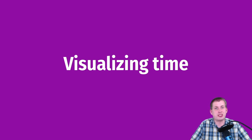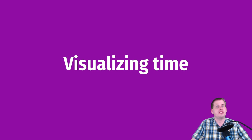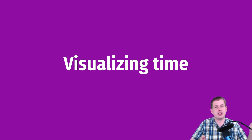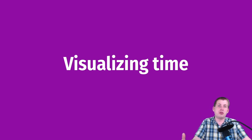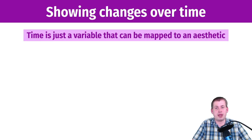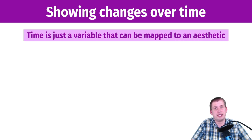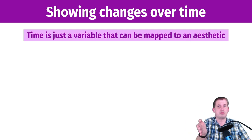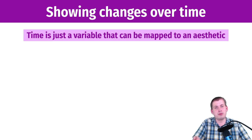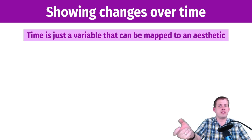To actually visualize changes over time, there's no magic trick to doing it. As long as you understand the grammar of graphics, where we're taking a variable in our data set and mapping it to some aesthetic, that's all we're doing with time visualization. Time is just another variable that can be mapped onto an aesthetic. It's generally measured as months, a year column, or an actual timestamp — if you have website visits, you'll have second-by-second timestamps. Anything that measures the passage of time can be put in a column and used however you want in your graph.